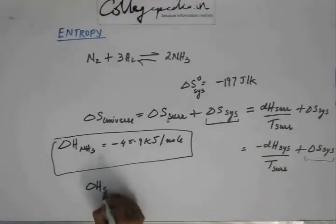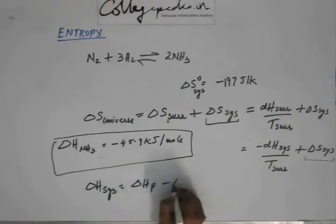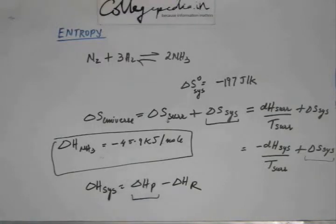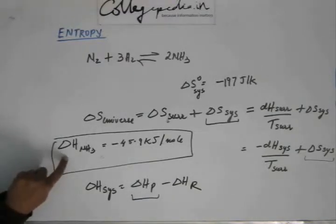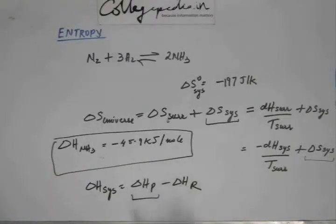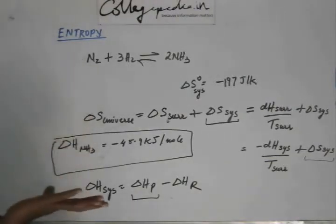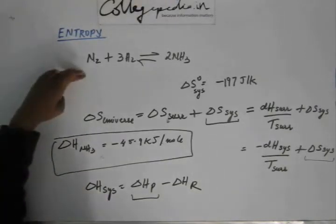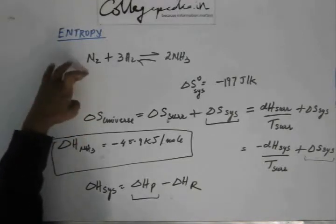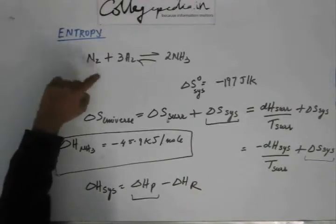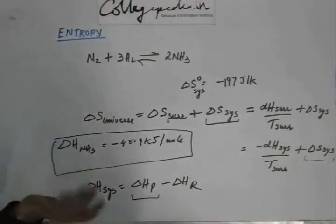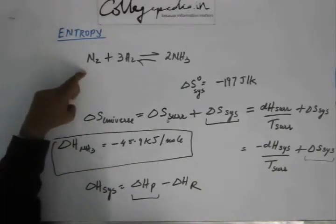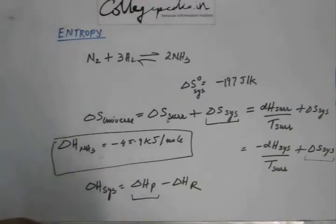Delta H of the system equals delta H of products minus delta H of reactants. For delta H of products the data is given — multiply by two. For delta H of reactants no data has been given, which means the data is not required. The enthalpy of formation of molecules in their natural state — for example nitrogen can be in atomic or molecular state — is taken as zero for whichever is the natural state.